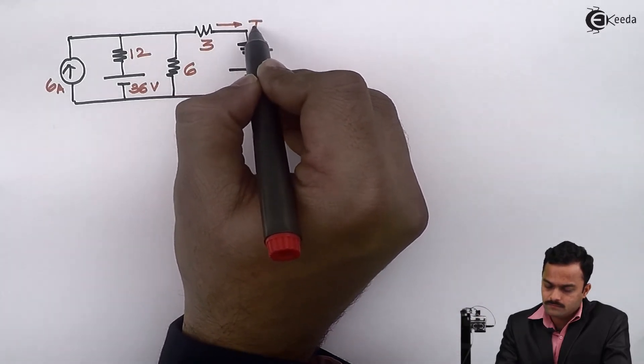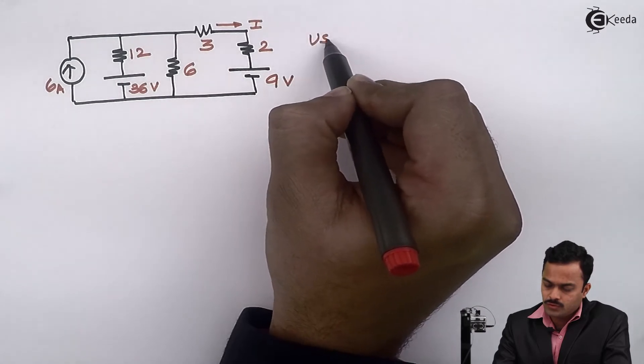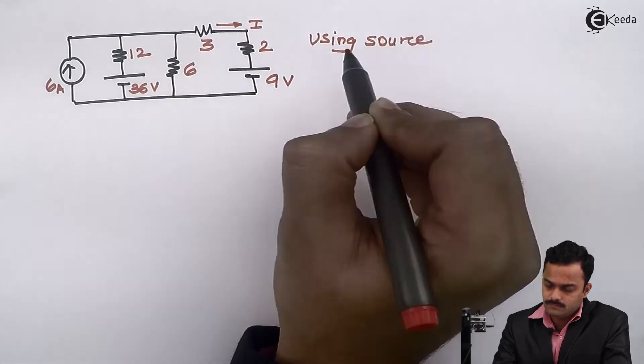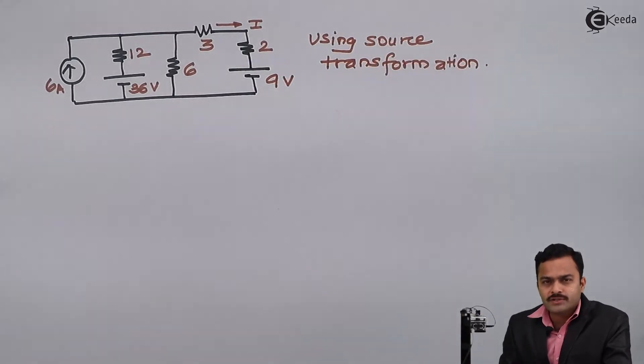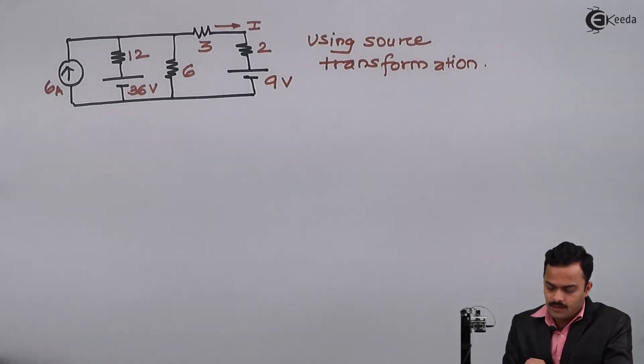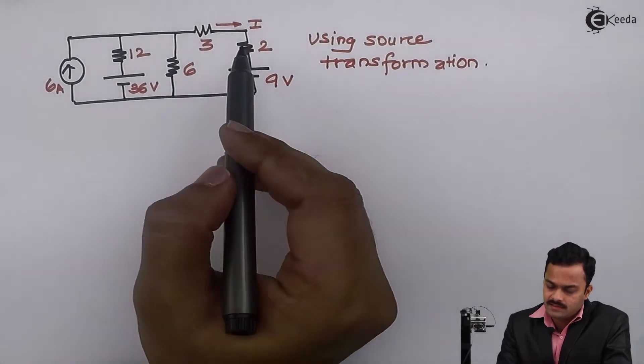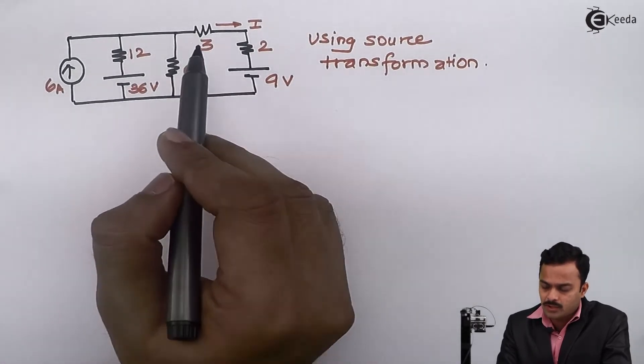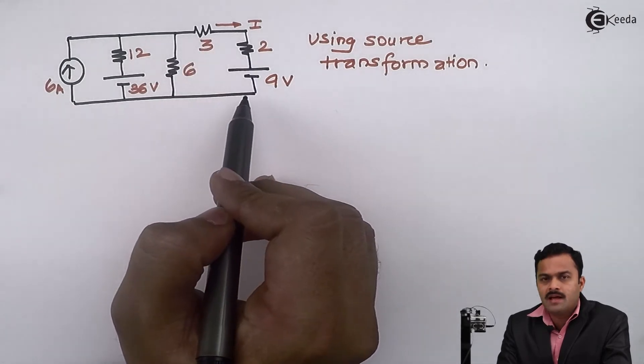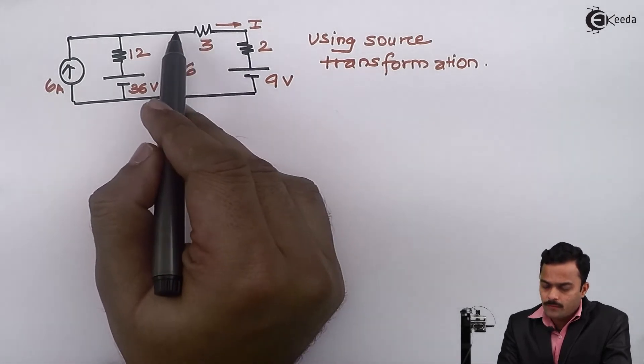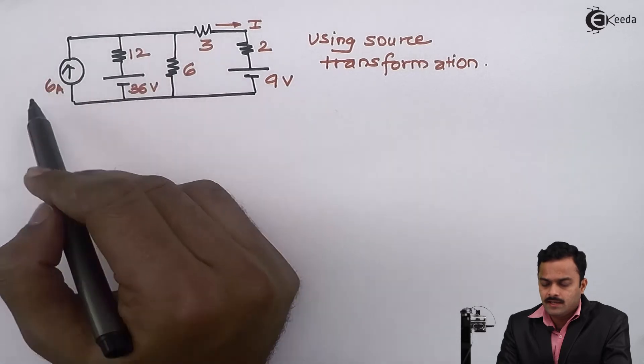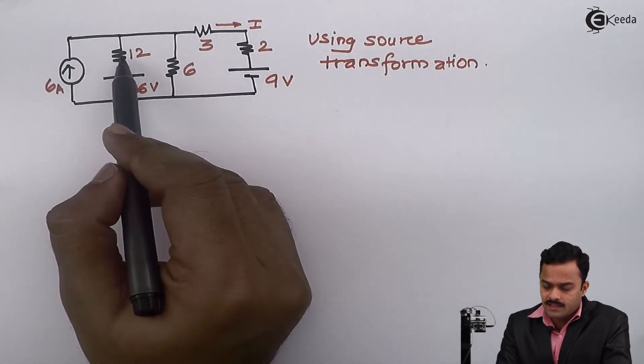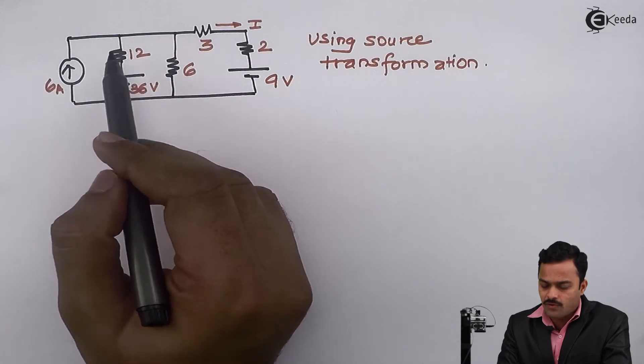The choice of source to convert is very important. I cannot consider this source for transformation because this is a simple series circuit, so I will not touch this part. The only thing remaining is this voltage source, which I can transform into an equivalent current source so that the two current sources can be added.